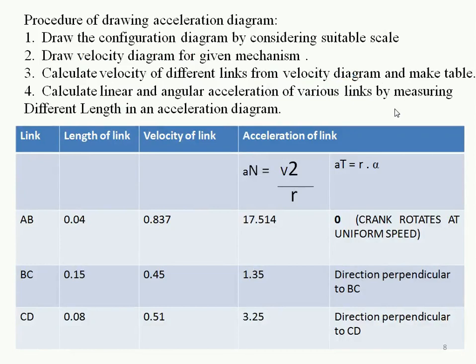First draw the configuration diagram, then draw the velocity diagram. We will now draw a table with four columns: link, length of the link, velocity of the link, and acceleration of the link. In our mechanism there are three moving links: AB, BC, and CD — the fourth link AD is fixed. Their lengths are 0.04, 0.15, and 0.08 m respectively. The velocities from the velocity diagram are 0.837, 0.45, and 0.51 m/s.